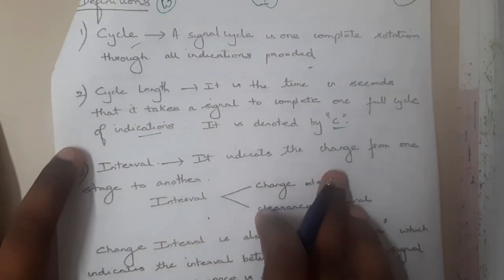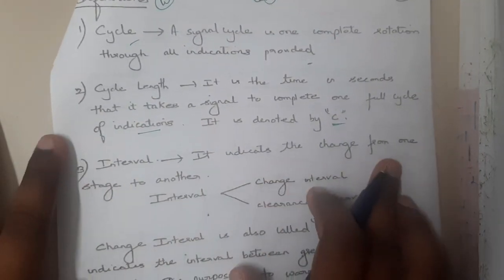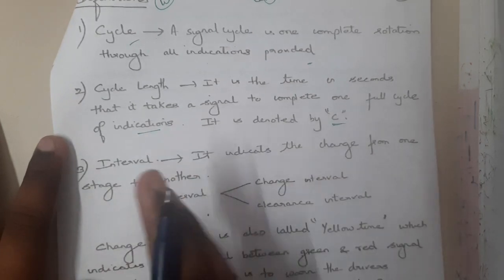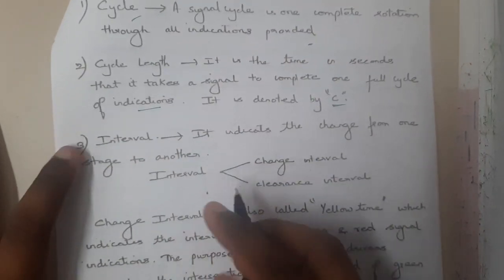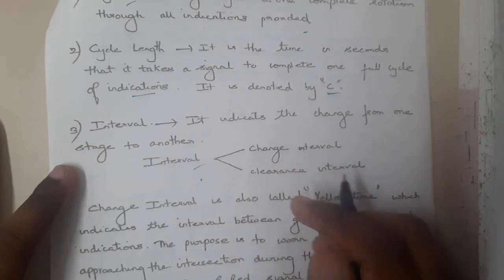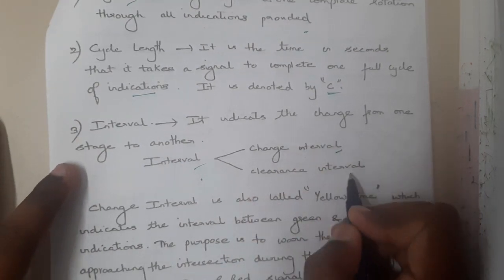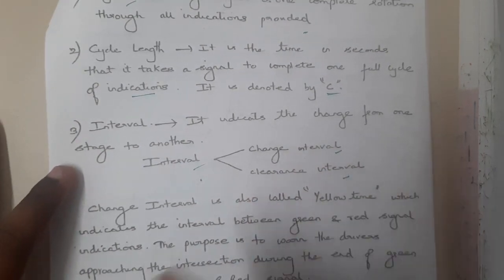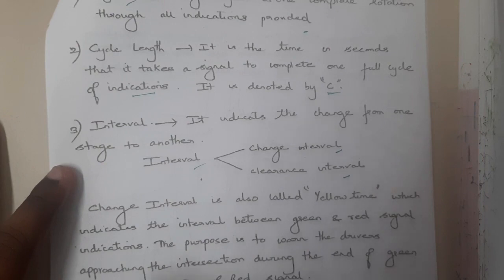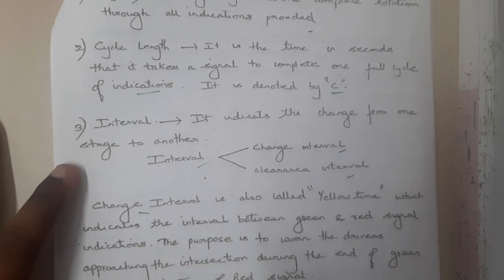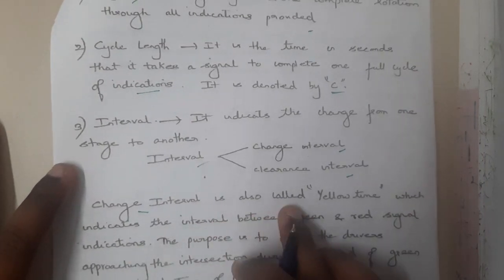Interval indicates the change from one stage to another, and that is called an interval. We have two types of interval terminology: change interval and clearance interval.